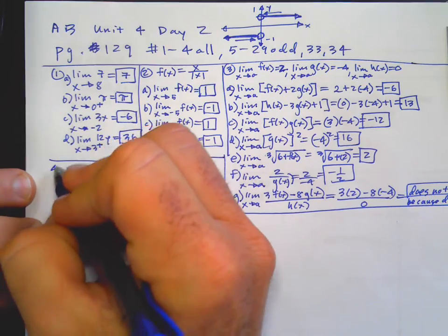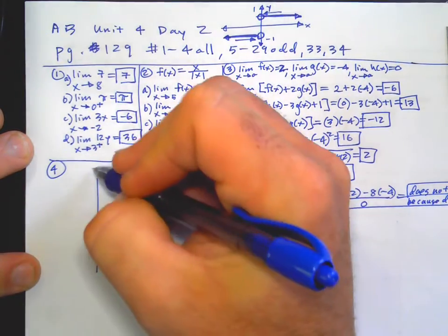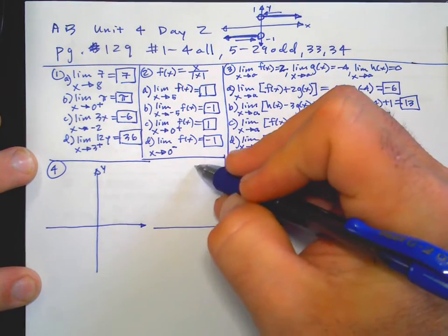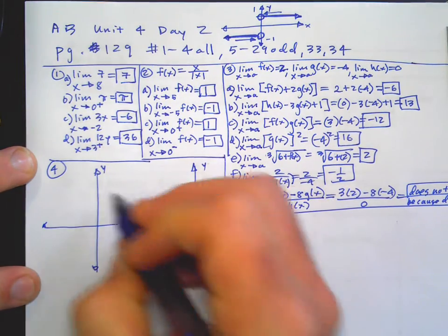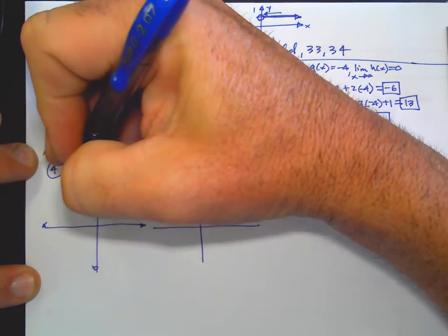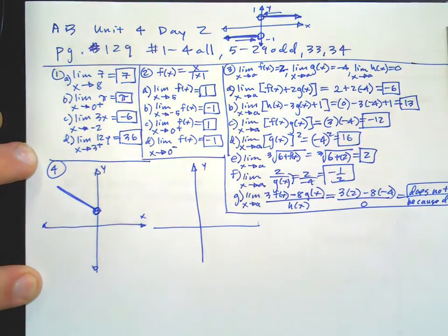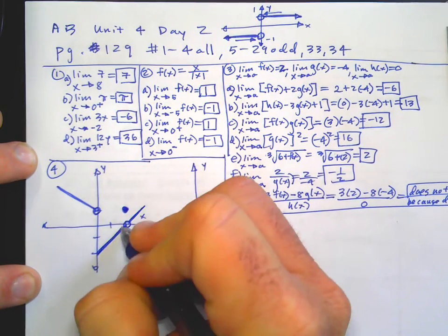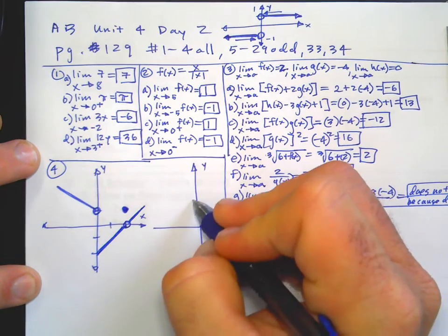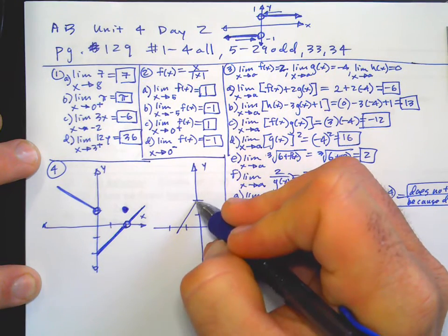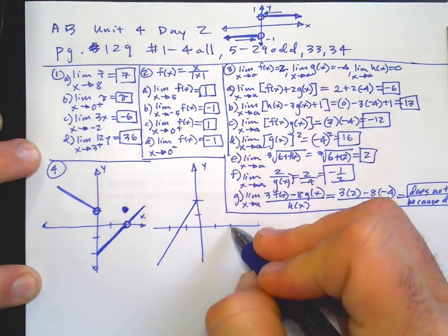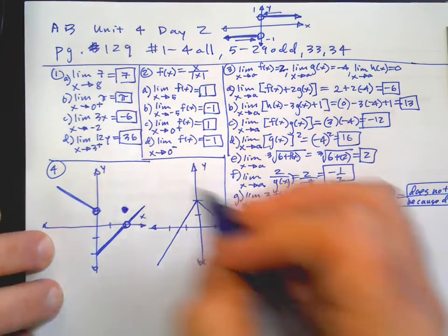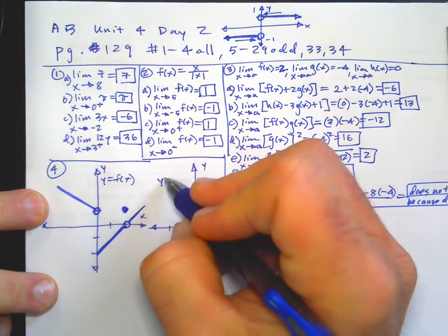Number four is similar, but instead of just giving you all the limits, you're going to have to use some pictures — good practice. So I'm going to draw both of these graphs. This one has an open circle, kind of goes like that, open circle here, a solid circle here, and just like that. And then this one seems to go like that. This one is F of X and this one is G of X.